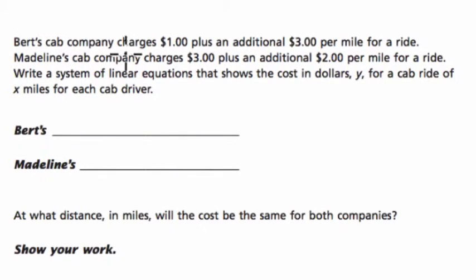It says that Burt's Cab Company charges a dollar plus an additional $3 per mile. So I'm going to pause. This is what I'm thinking already. I'm thinking we've got a starting point of a dollar, and we're adding $3 per every X. And that equals, let's say, Y, our cost. Now let's go forward and see what happens.